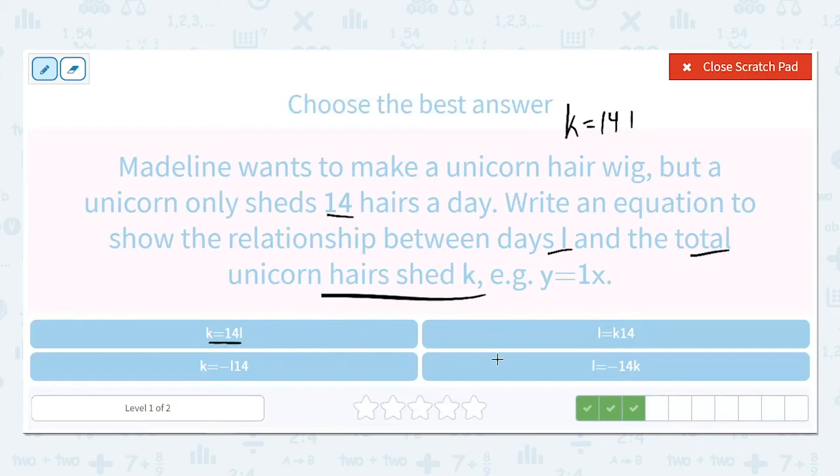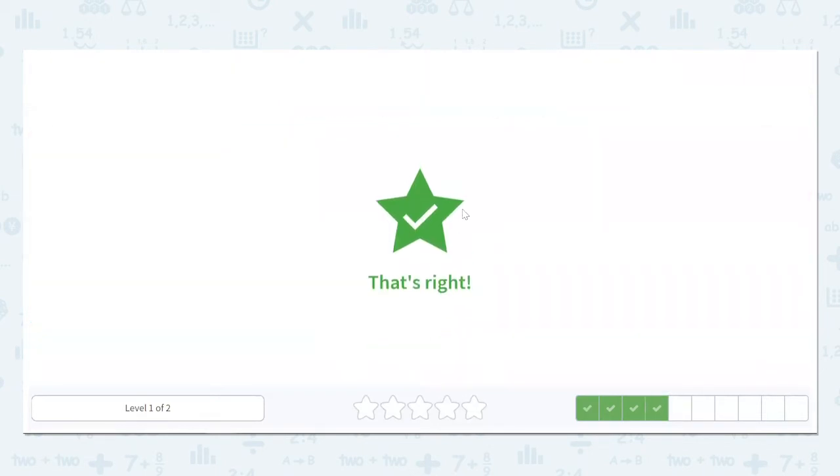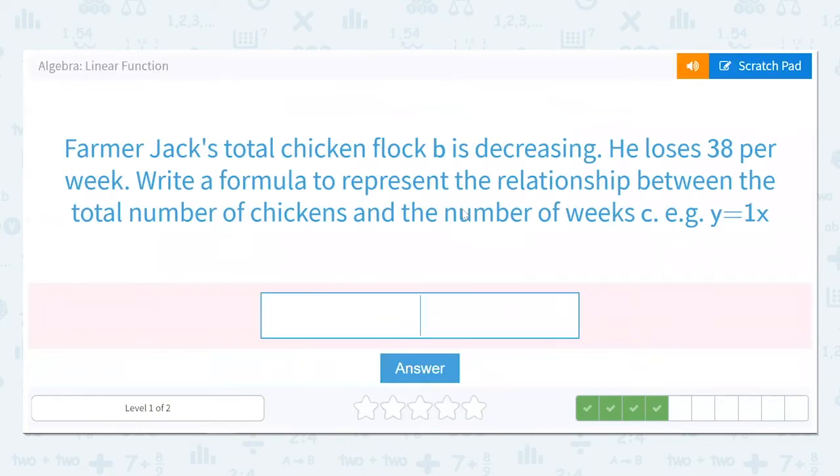C equals 14, same as the last one. And the number of days in this one they called I. So C equals 14I. So K equals 14I. This one is negative. That's the only one that has K equals. Let's make sure that we don't want a negative here. So it says we're trying to find the total unicorn hair shed. So K equals 14. That was our only option here.